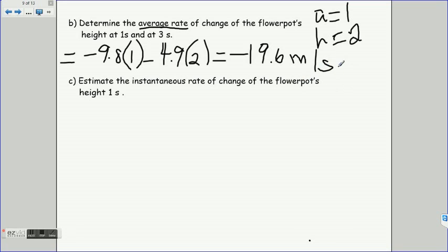And to really complete this, we really should be putting a therefore statement. Therefore, the average rate of change of the flower pot's height between one and three seconds is minus 19.6 meters per second. And that would be a complete answer.